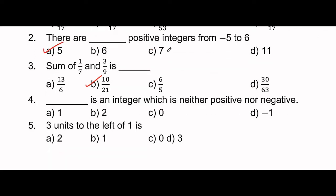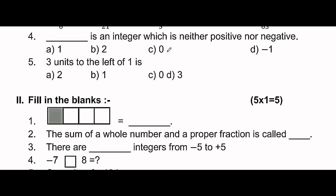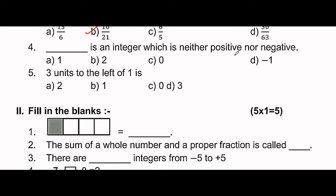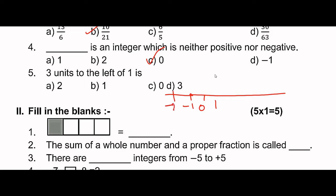Fourth question: Dash is an integer which is neither positive nor negative. The answer is 0. Zero is neither positive nor negative. On the number line, 1's left side gives us 0, then minus 1, minus 2.